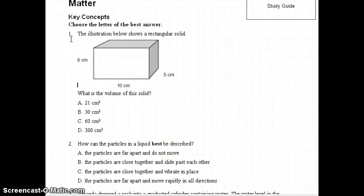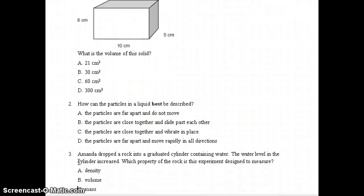Number 1, it says the illustration below shows a rectangular solid. You see the sides. We have 6 centimeters by 10 centimeters by 5 centimeters. And it asks, what is the volume of this solid? The correct answer should have been D, 300 cubic centimeters. Number 2, how can the particles in a liquid best be described? The correct answer should have been B, the particles are close together and slide past each other. Number 3, it says Amanda dropped a rock into a graduated cylinder containing water. The water level in the cylinder increased. Which property of the rock is this experiment designed to measure? The correct answer should have been B, volume.